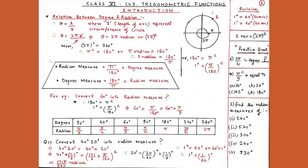By unitary method, since 1 degree equals 60 minutes, we get 60 minutes equals 1 degree, so 1 minute equals 1 upon 60 degrees. Therefore 20 minutes equals 20 upon 60 degrees, which equals 1 upon 3 degrees. So we can write this as 40 degrees plus 1 upon 3 degrees, giving 121 upon 3 degrees.